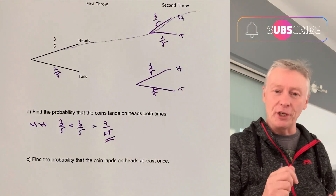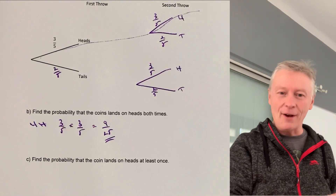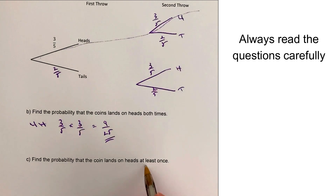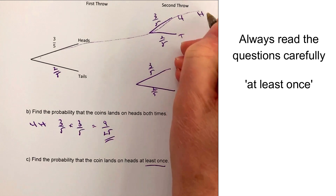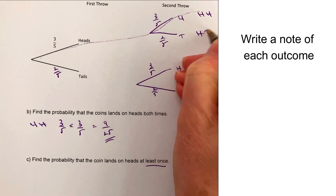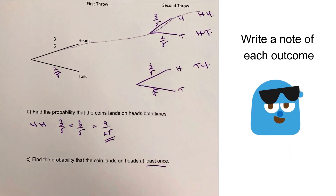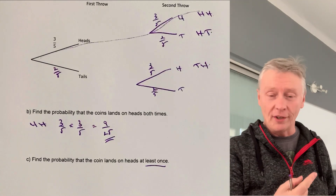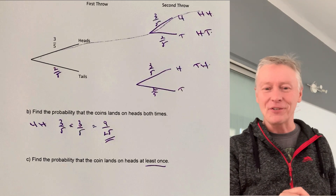Let's move on to part C. We're going to use the probability tree diagram to work out each of the outcomes. Part C asks us to find the probability the coin lands on heads at least once. So we look at heads-heads, heads-tails, and tails-heads — those are the outcomes where heads appears at least once.